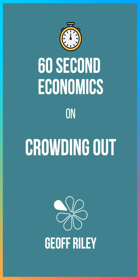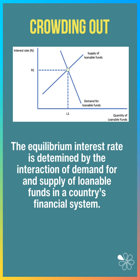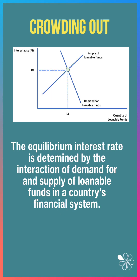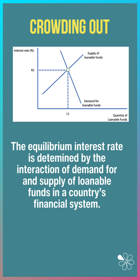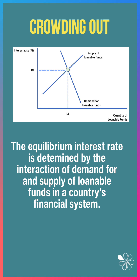60-second economics on crowding out. Here's the key diagram. The equilibrium interest rate is determined by the interaction of demand for and supply of loanable funds in the country's financial system. So here the rate is R1.